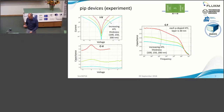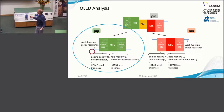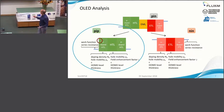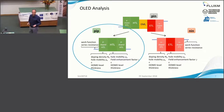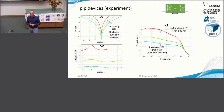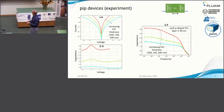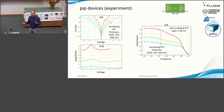The parameters we want to extract include the work function — less relevant if contacts are good and highly doped — doping density, hole mobilities in the intrinsic layer, the HOMO level, and the dielectric constant epsilon. It's a limited number of unknowns, so we can hope to extract them reliably. In fabrication, the intrinsic layer thickness was varied while the boundary layers were kept fixed at 30 nanometers.